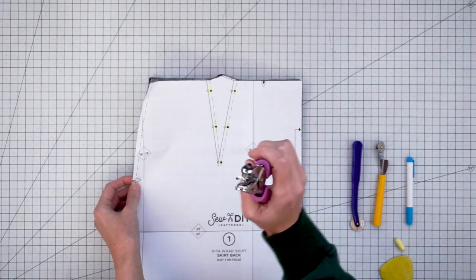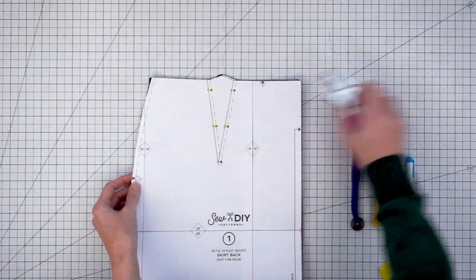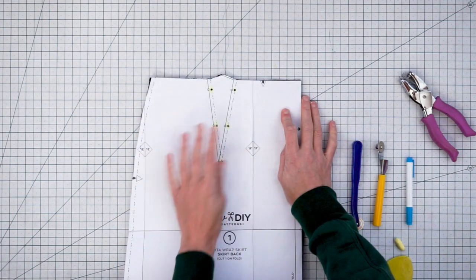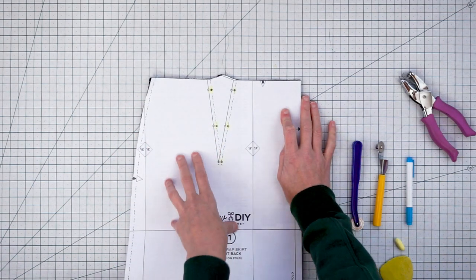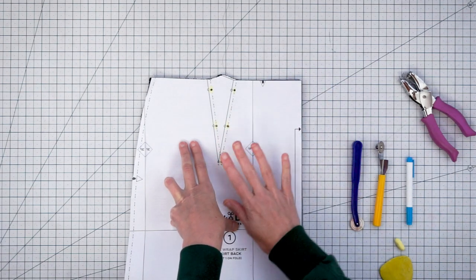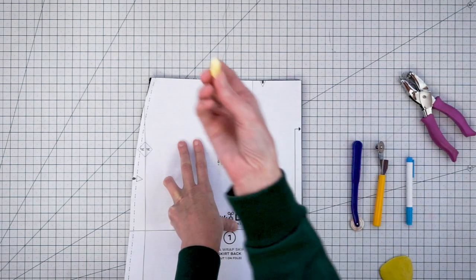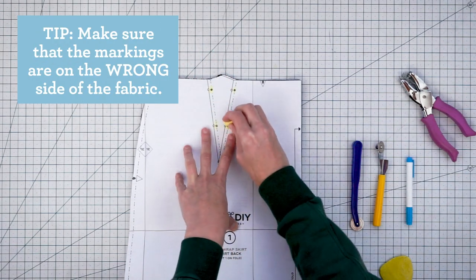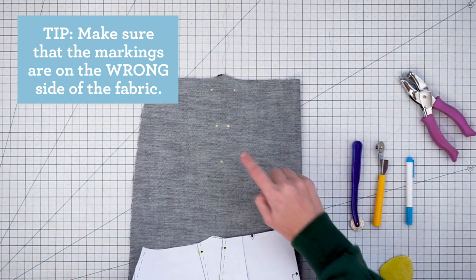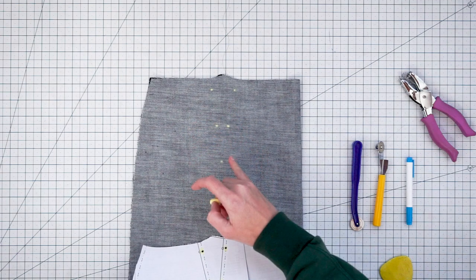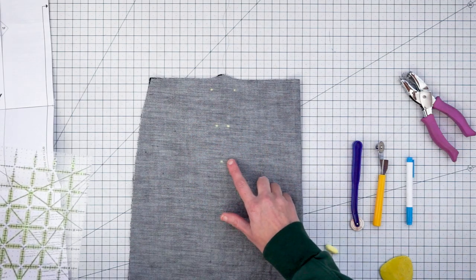After you punch the holes in your paper, you want to have your paper on your fabric. My fabric's already cut out and it's really best to do this right after you cut your fabric and before you move anything. Then I just take a simple piece of chalk and I rub the chalk over the hole. Then when I lift up the paper, I see that I have these little chalk dots on my fabric.